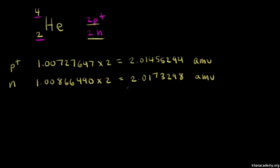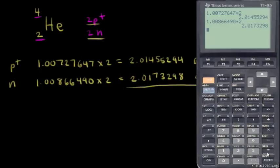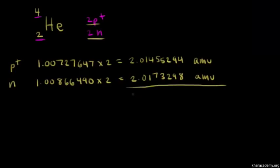So the mass of a helium nucleus — if we add those two numbers together, we should get that mass. 2.01732980 plus 2.01455294 gives us 4.03188274 AMUs. This is the predicted mass of the helium-4 nucleus.